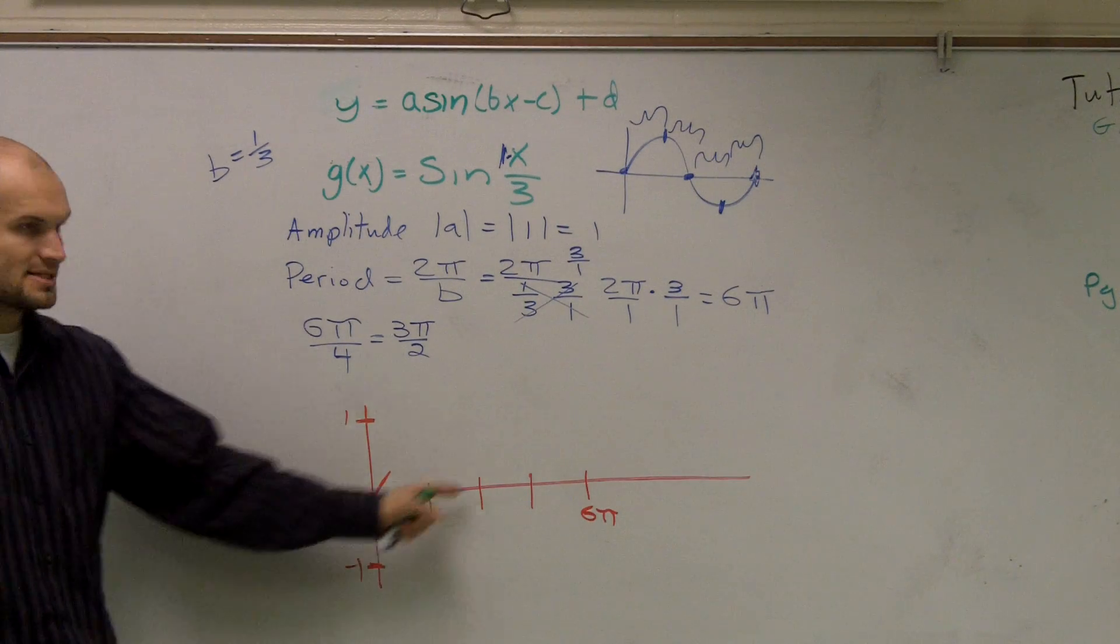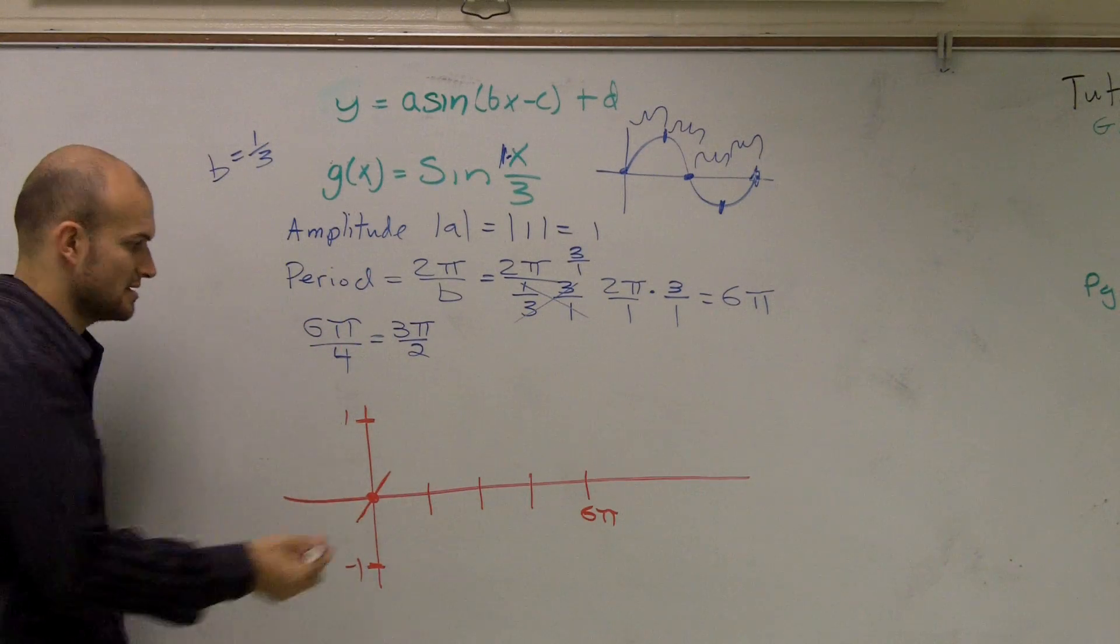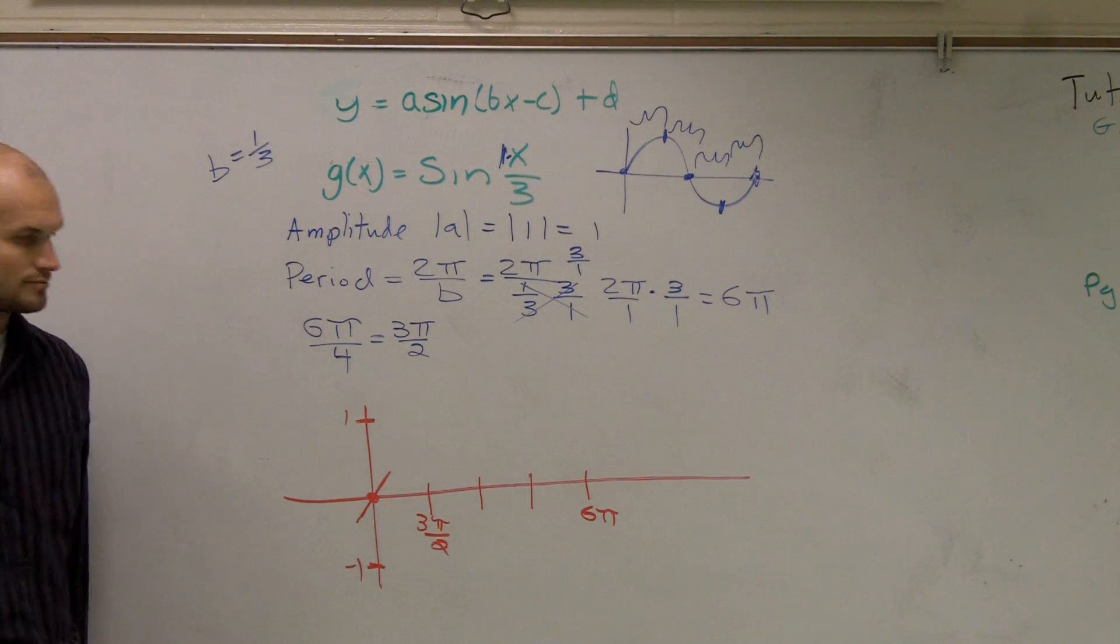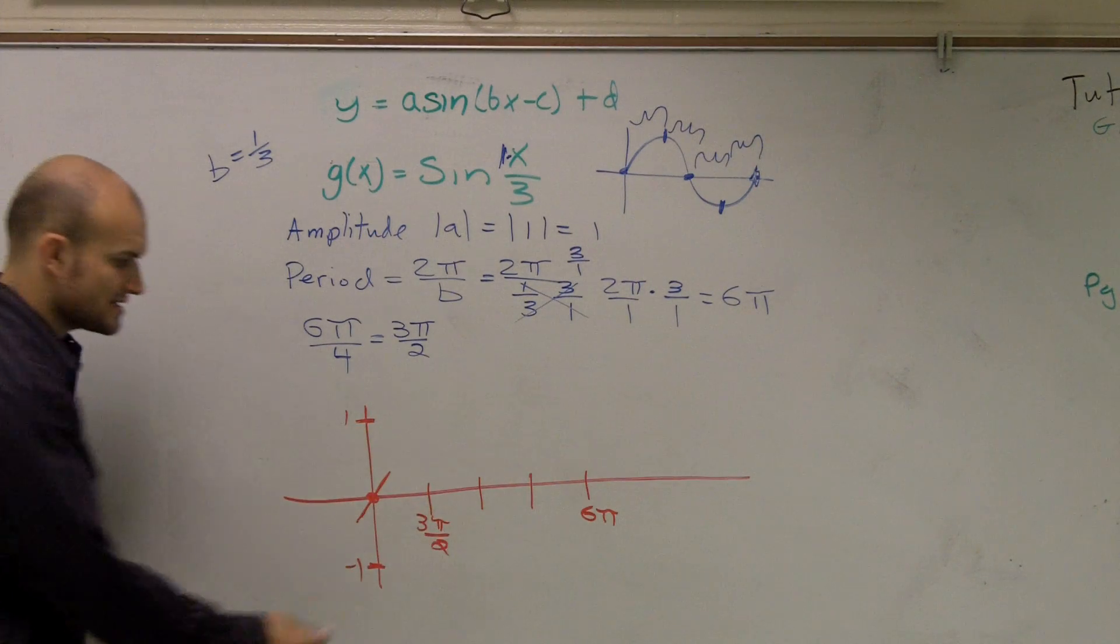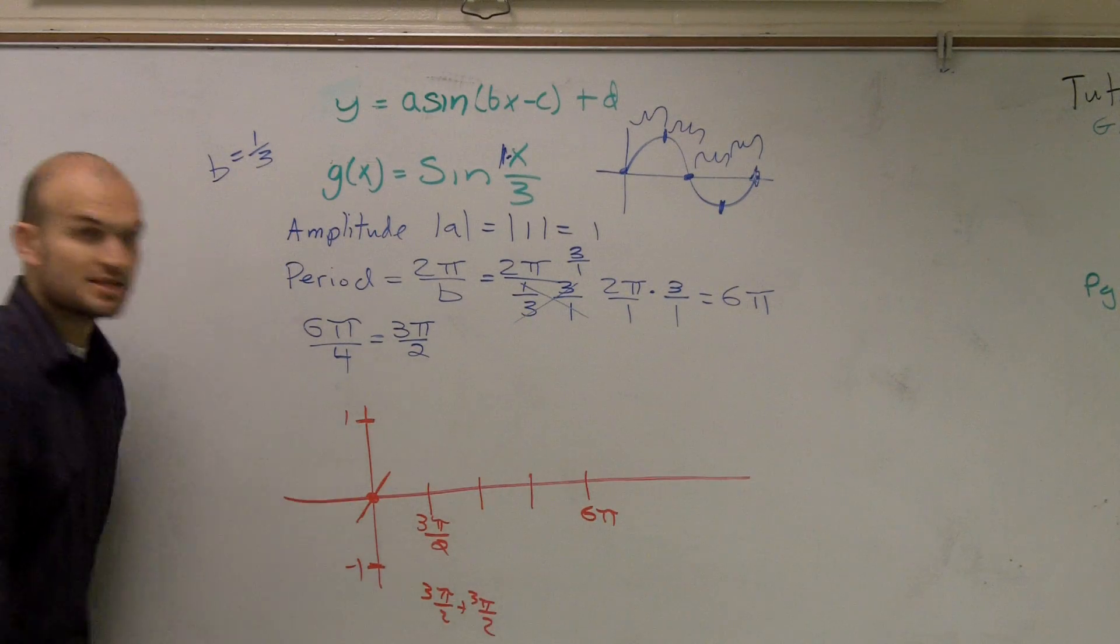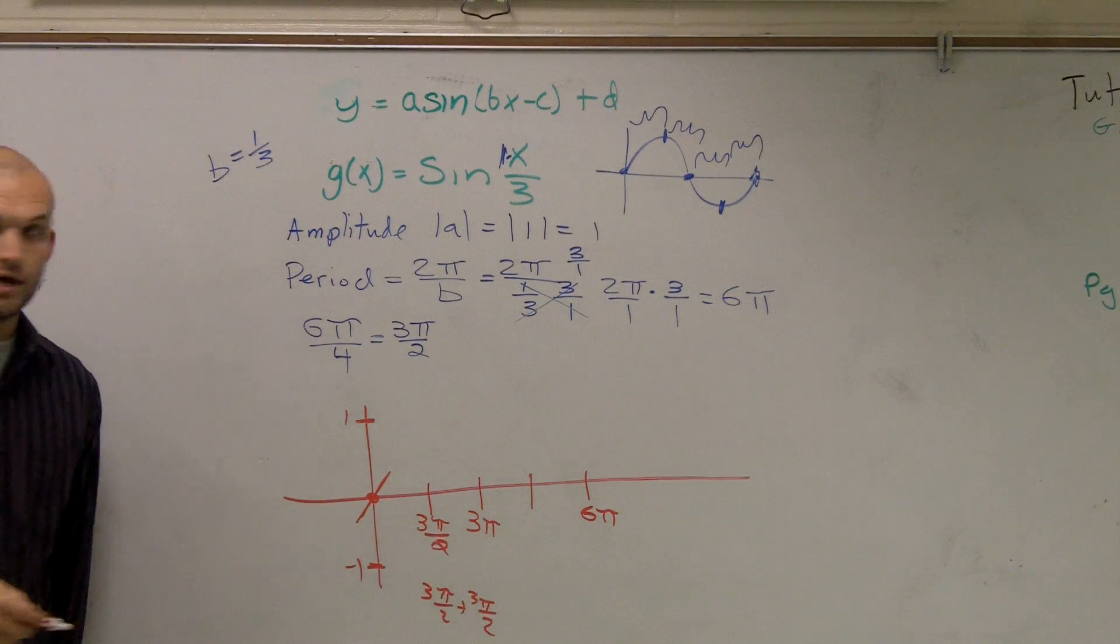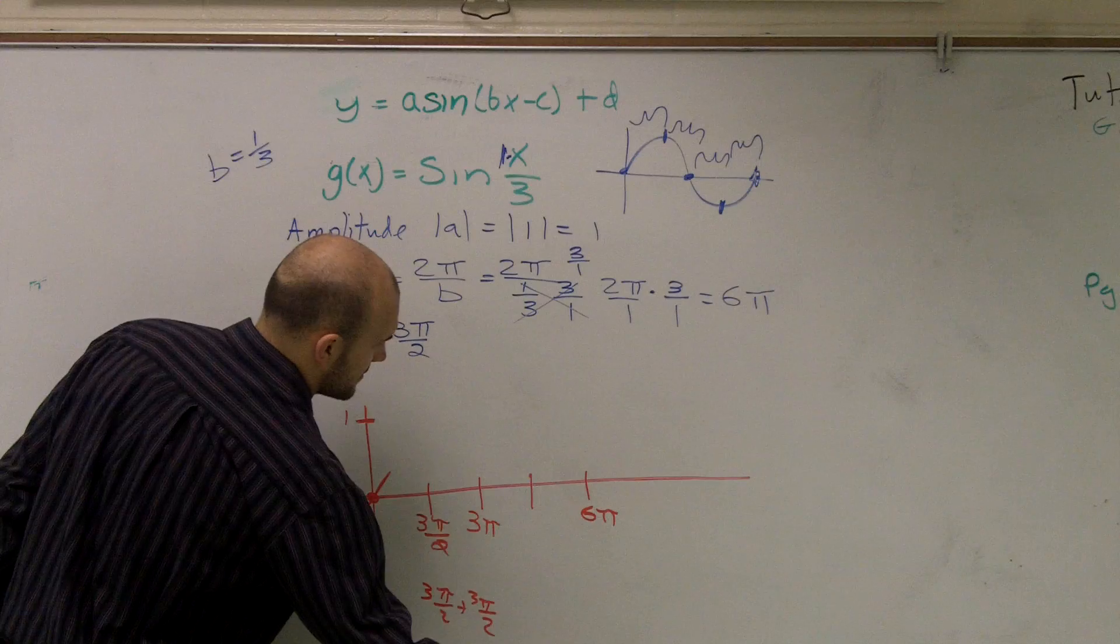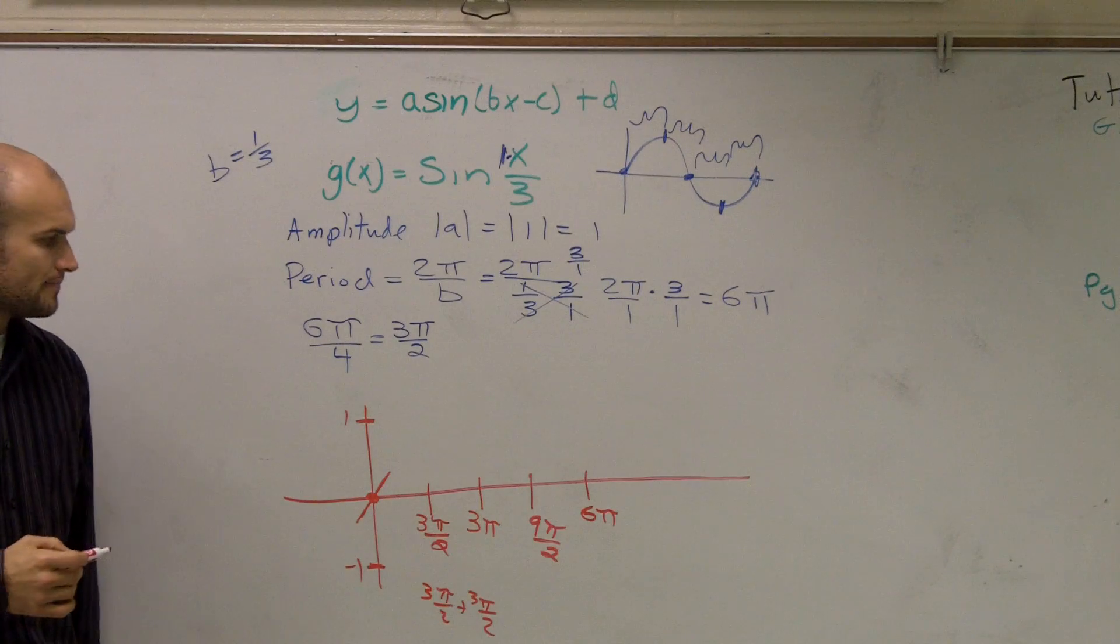Now, we now need to determine what are the rest of these points. Well, the first point, remember I said between each point is equal distance? So the first point is just easily going to be what you divided, 3π divided by 2. Then you add another 3π over 2. So I'd say 3π over 2 plus another 3π over 2, which gives you 6π over 2, which is 3π. Then you take 3π, add a 3π over 2 again to get 9π over 2. Does everybody see how I'm getting this work?